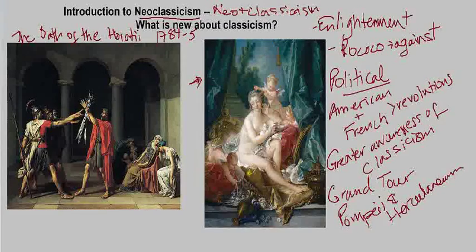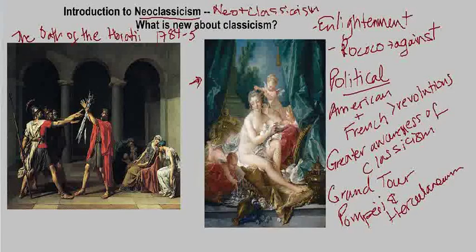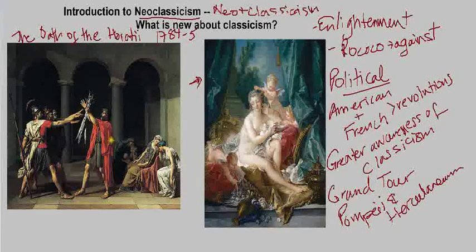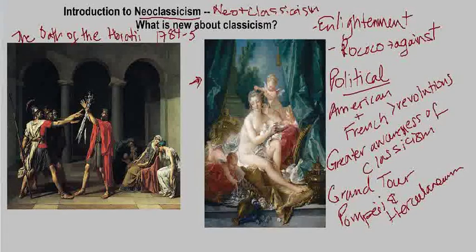What they do have in common is that they're both interested in the classical world in some way. Boucher is showing us the Toilet of Venus — a classical god, Venus — but really Venus in the guise of a contemporary woman. Whereas David shows us a fully classical scene: the setting is classical, the people are dressed in classical dress, and the story is of the Horatii family from ancient Rome.